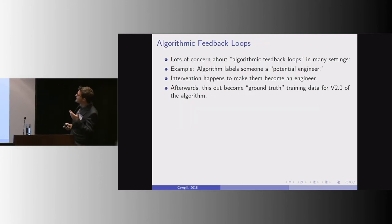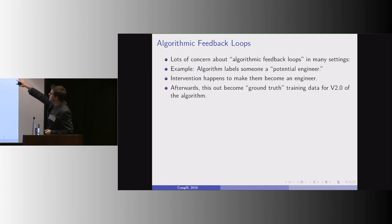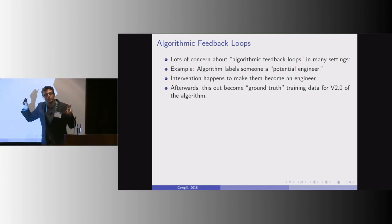All right, so there's lots of concern in the area of algorithmic bias about so-called algorithmic feedback loops, which is where we label someone a possible engineer, then an intervention happens thanks to that algorithmic label. They become an engineer, but later on that becomes, quote-unquote, ground truth.